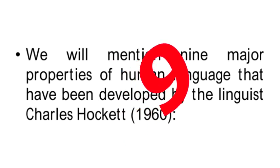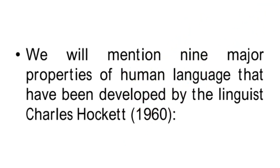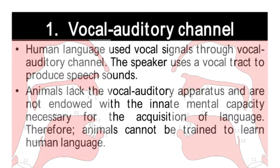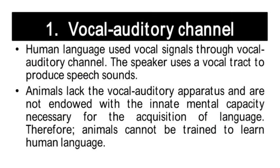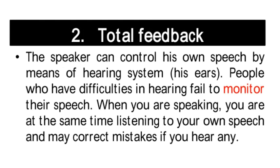We will mention nine major properties of human language developed by linguist Charles Hockett. The first is vocal auditory channel: human language uses vocal signals through the vocal auditory channel. The speaker uses a vocal tract to produce speech sounds. Animals lack the vocal auditory apparatus and are not endowed with the innate mental capacity necessary for language acquisition.